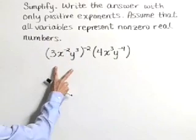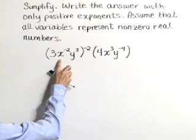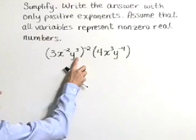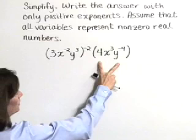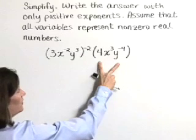Here we have the expression with the quantity 3x to the negative 2, y to the third, all raised to the negative 2 power, times 4x to the third y to the negative fourth.